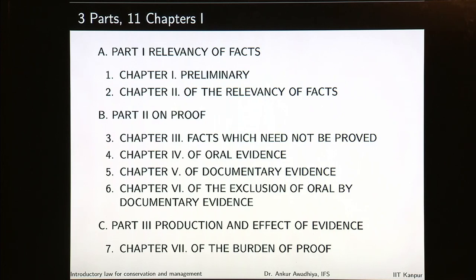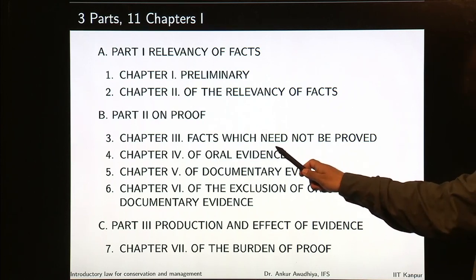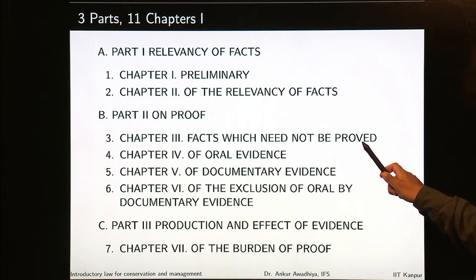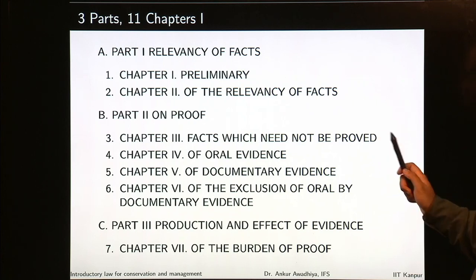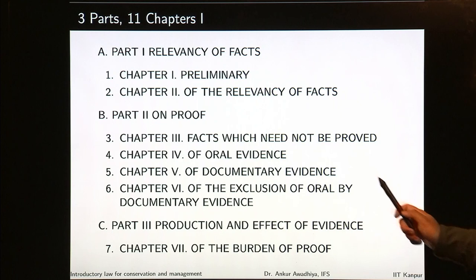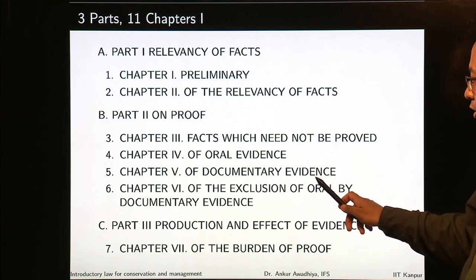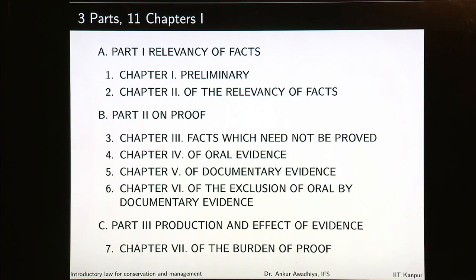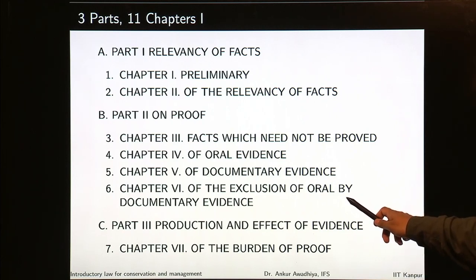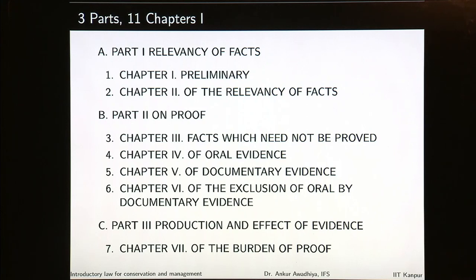The second part deals with proof. The chapters deal with the facts which need not be proved — certain facts are taken to be correct and need not be proven. It talks about oral evidence and documentary evidence, including documents and the exclusion of oral by documentary evidence. Part three deals with production and effect of evidence — how is evidence produced in the court of law and what is the effect of that?